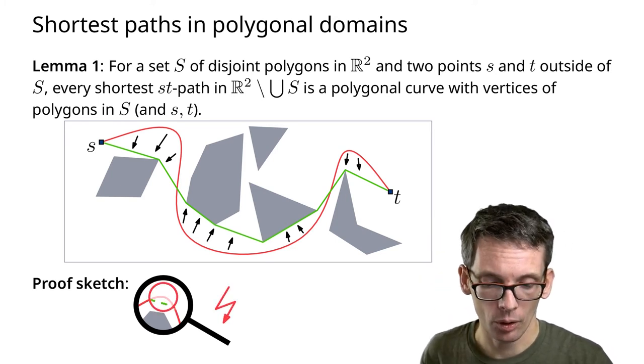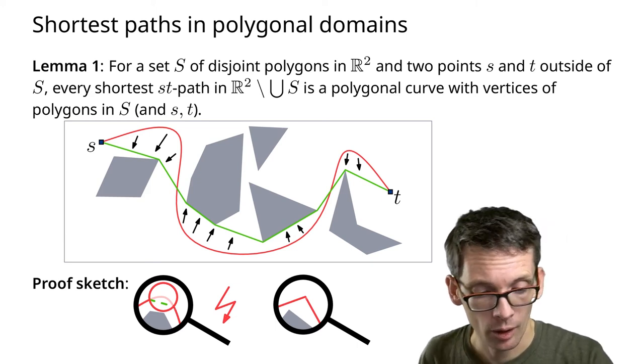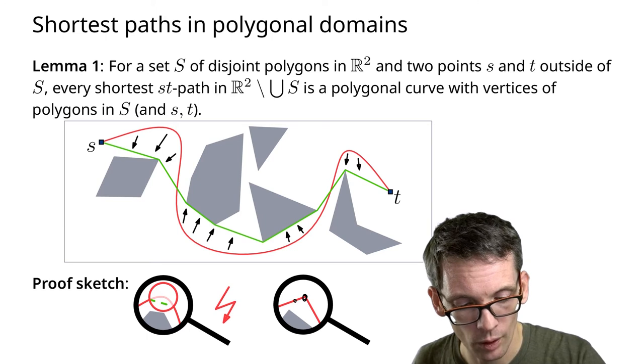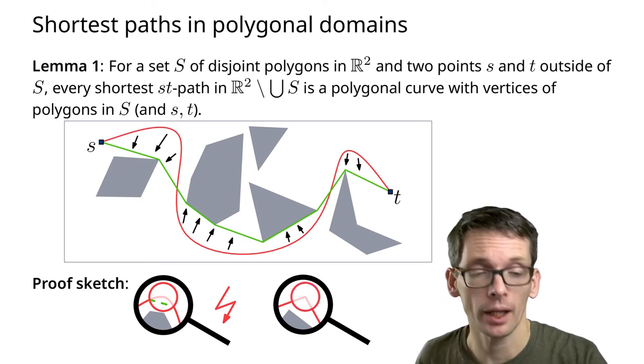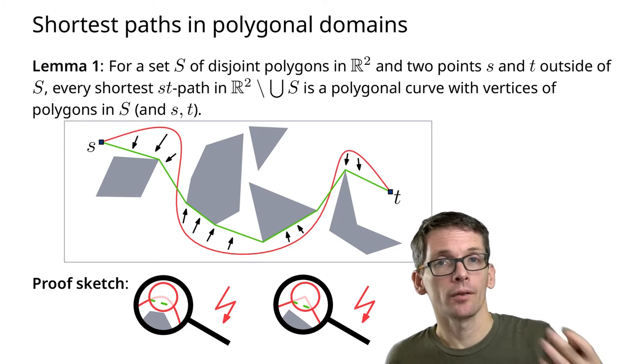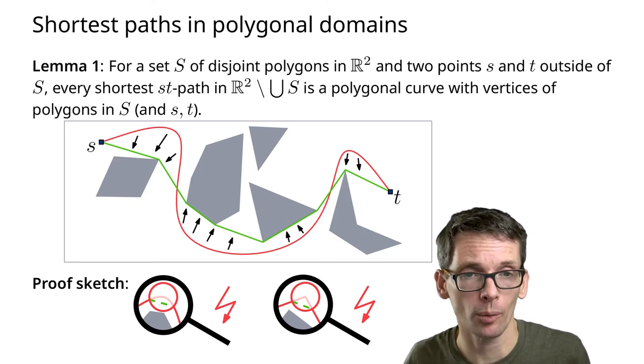Then, beyond that, assume it is polygonal, but the vertex is not a vertex of the obstacle, then I can do the same trick, making it shorter. Therefore, this cannot have been the shortest path. Therefore, the shortest path has to use only vertices that are vertices of obstacles.